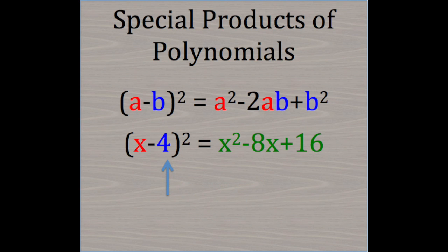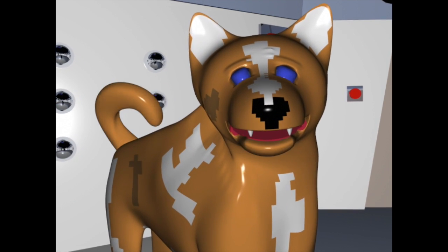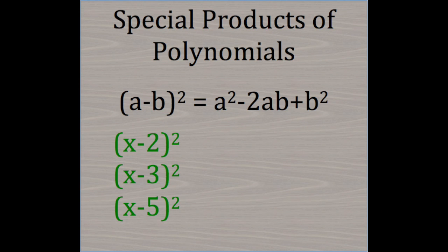And our b value, negative 4, gets squared, giving us positive 16. Now try these on your own. How did you do?